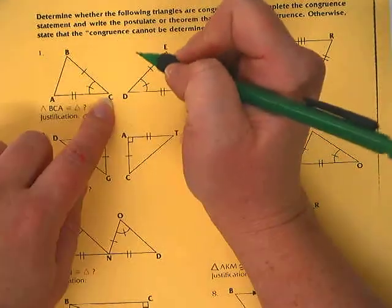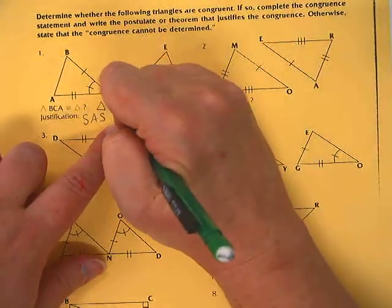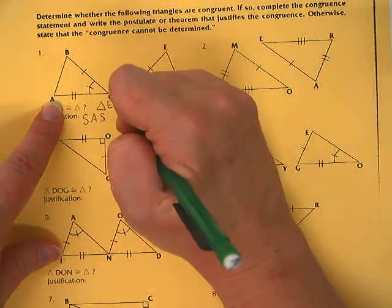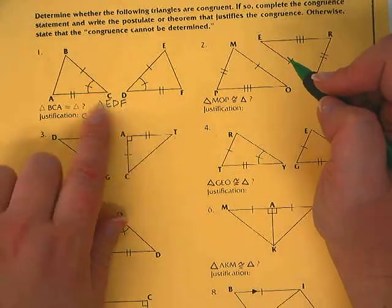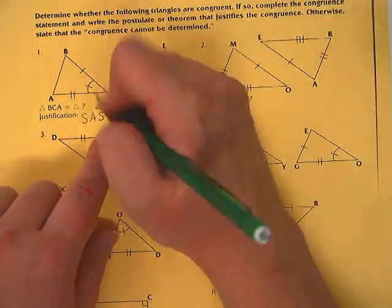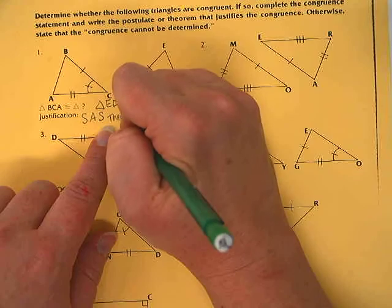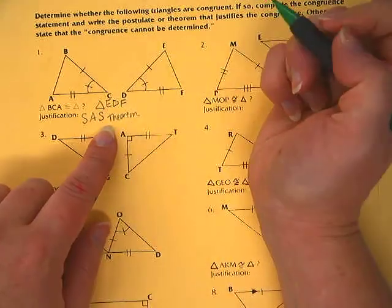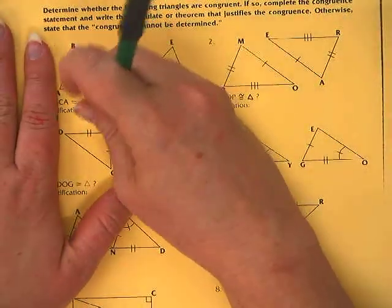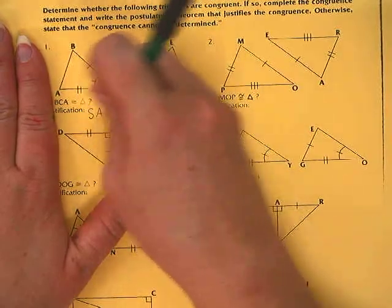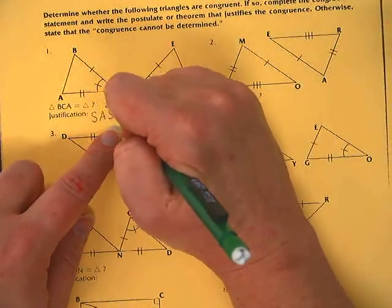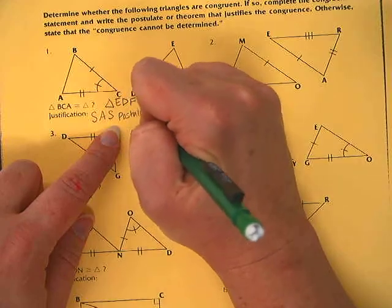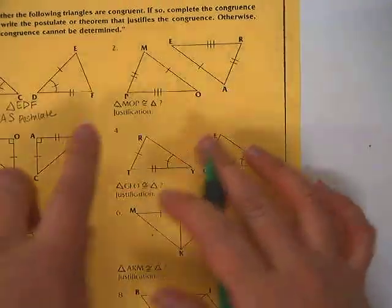so triangle E. Then C corresponds to D, so D, and A corresponds to F. So the congruence statement is triangle BCA is congruent to triangle EDF because of the side, angle, side theorem. And actually that might be more of a postulate. Some of them are postulates and some of them are theorems. Now that I think about it, I'm pretty sure that side, angle, side is actually a postulate. We were able to show that pretty easily.